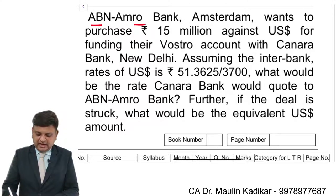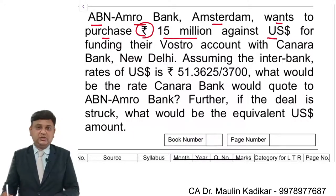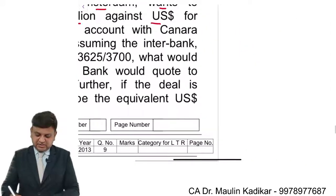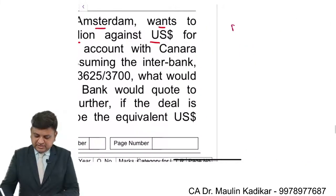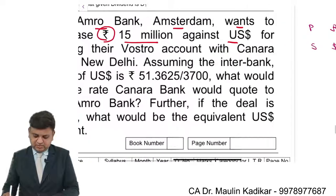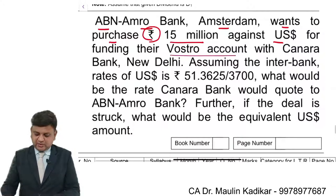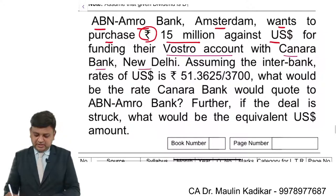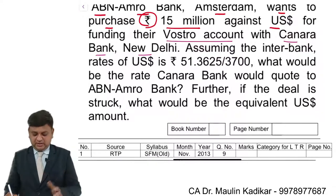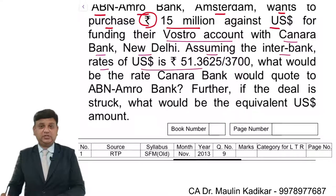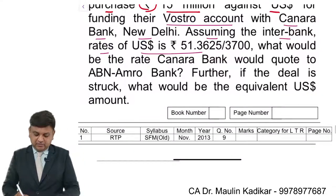ABN Amro Bank Amsterdam wants to purchase Rs 15 million against dollar. The transaction is purchase of rupees and sell of dollar for funding their Vostro account with Canara Bank New Delhi. Assuming the interbank rate of United States dollar is this, what would be the rate Canara bank would quote to ABN Amro bank?